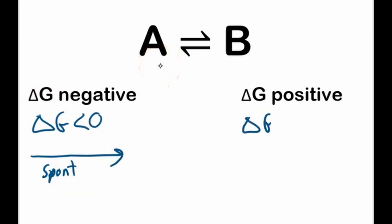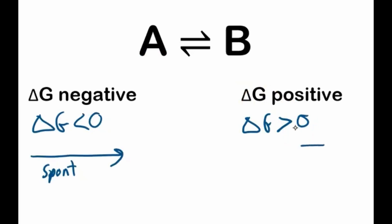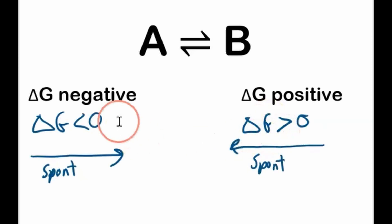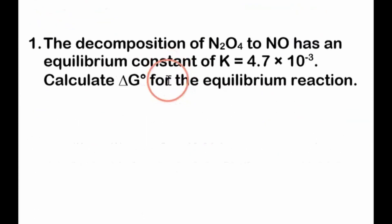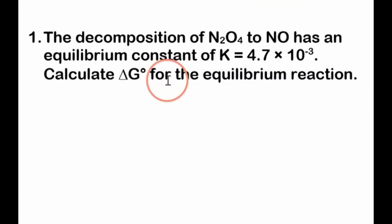But if the Gibbs free energy is greater than zero, normally we'd say it's non-spontaneous, and that's true to the right. But in an equilibrium reaction, it's spontaneous to the left — the reverse reaction is spontaneous. So depending on whether ΔG is positive or negative, we can determine the direction of the reaction. Let's jump into the problems.